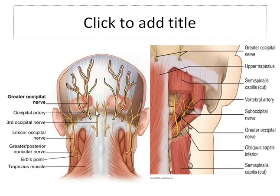Superficial fascia also contains the third occipital nerve, which arises from the dorsal ramus of C3. As you can see in the image, the third occipital nerve also pierces the trapezius muscle and semispinalis capitis. It supplies the skin at the back of the neck up to the greater occipital protuberance, as you can see in the image.